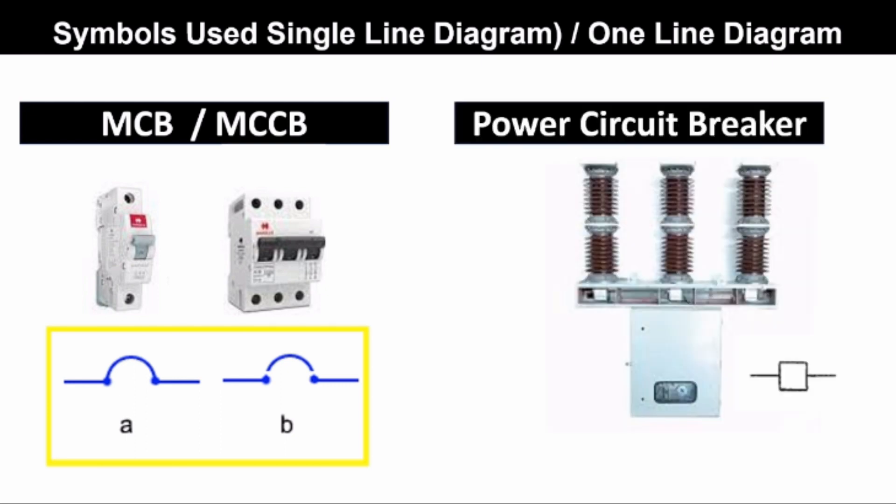Power circuit breaker. The symbol of the power circuit breaker is generally used in the substation. It is mainly located in the switchyard. The symbol is this one.